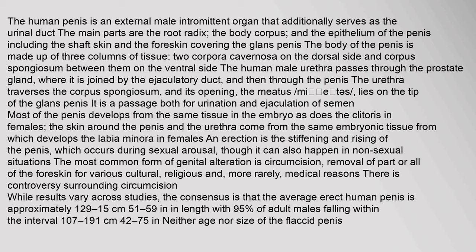It is a passage both for urination and ejaculation of semen. Most of the penis develops from the same tissue in the embryo as does the clitoris in females. The skin around the penis and the urethra come from the same embryonic tissue from which develops the labia minora in females.